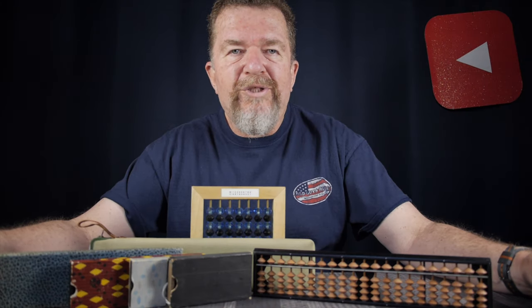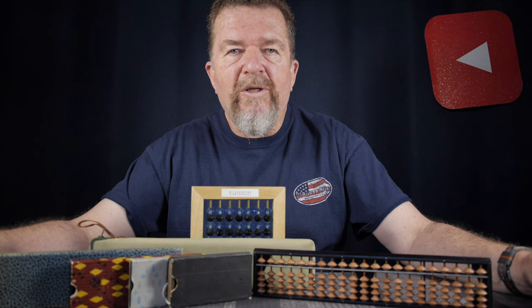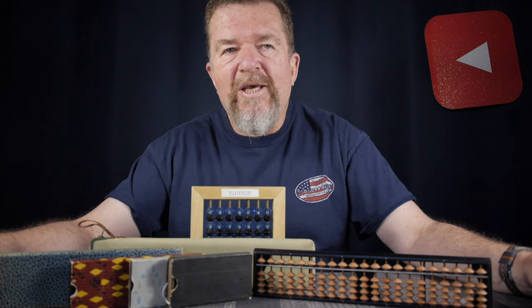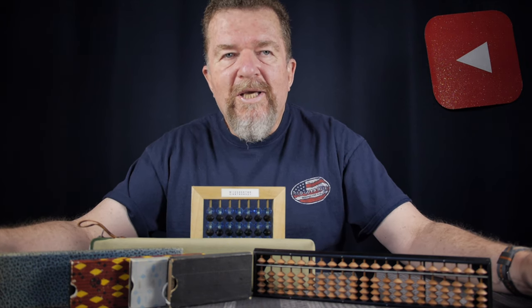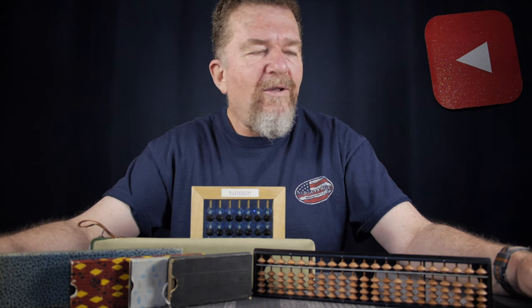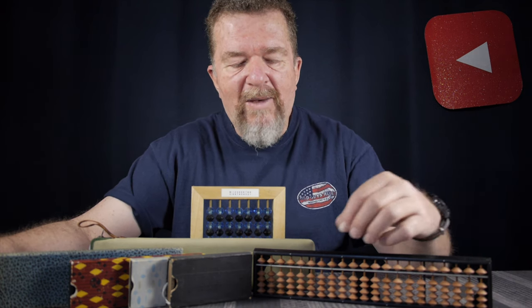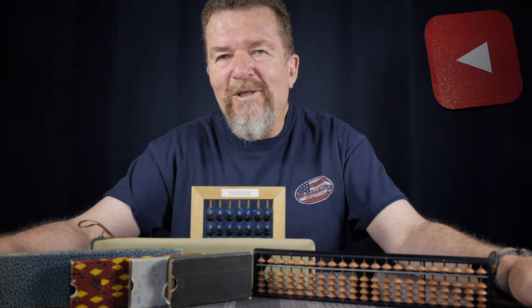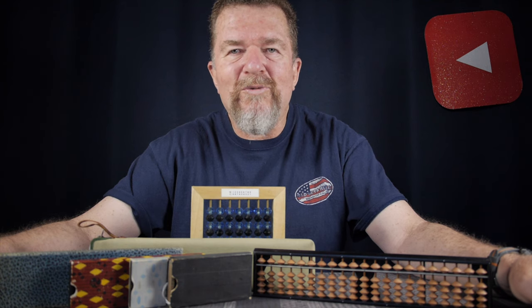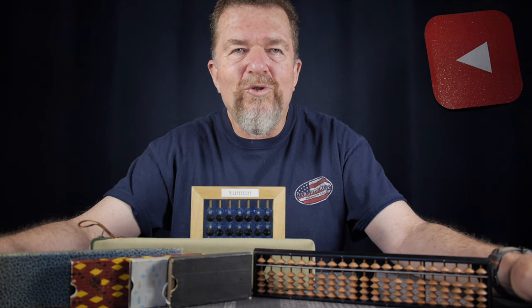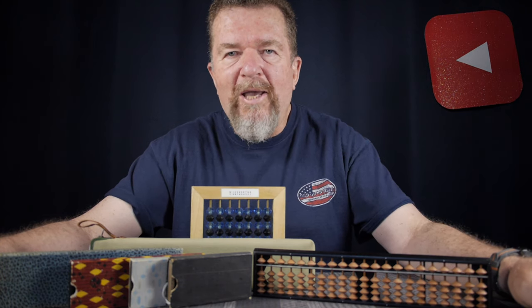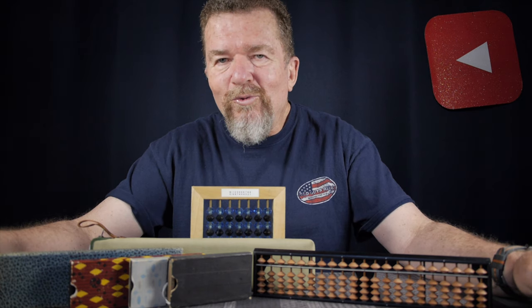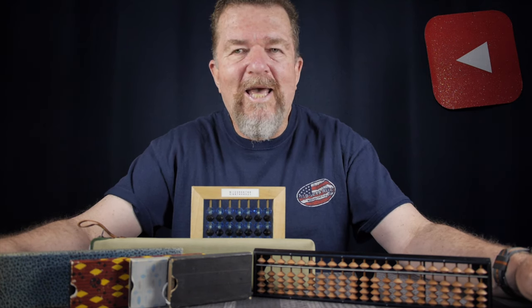The key to becoming proficient at the abacus is really practice. That's all it is. You have to sit down and find time in your day to take a column of numbers and add them up. One thing you can do if you want to do a little bit of practice on the abacus is take store receipts. Like a grocery receipt is really a great thing to use for the abacus because typically when you go to the grocery store, you have a whole column of items. So grocery receipts are great for practicing the abacus.